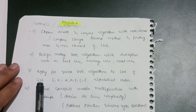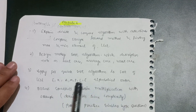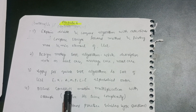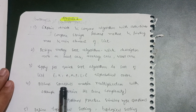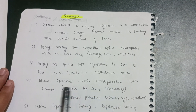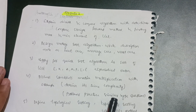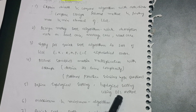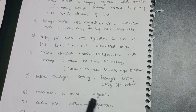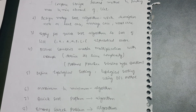Apply the quick sort algorithm to sort the list 'E X A M P L E' in alphabetical order. Then discuss Strassen's matrix multiplication with example and derive its time complexity. Also define topological sorting using DFS method. Practice similar type questions — maximum and minimum algorithm, quick sort, binary search, and merge sort problem algorithms are the key questions from Module 2.